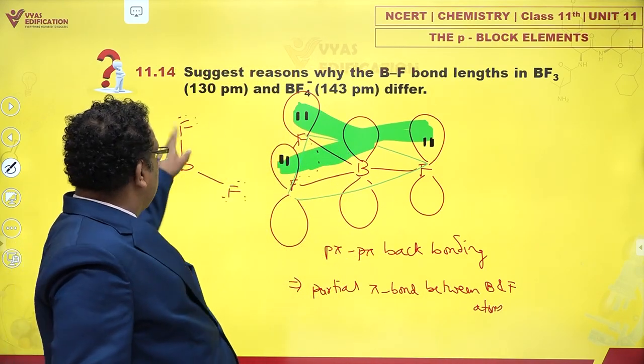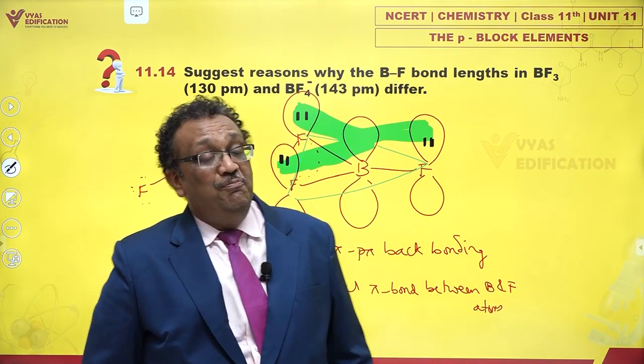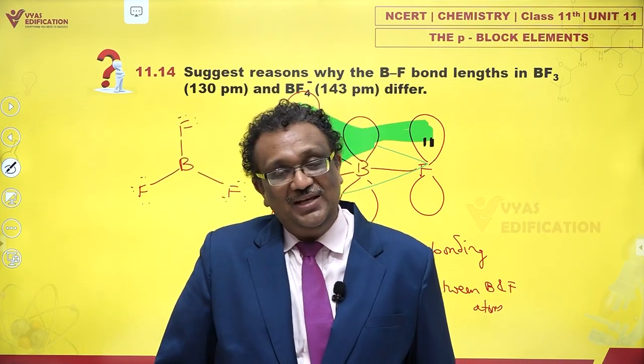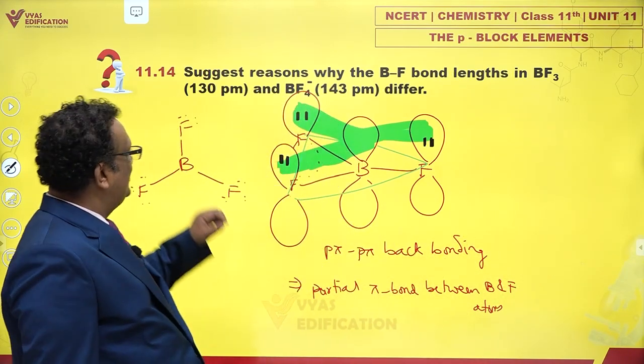That means it is not just a single bond. There is also a slight touch of a double bond, and bond order increases. Because bond order increases, bond length slightly decreases.